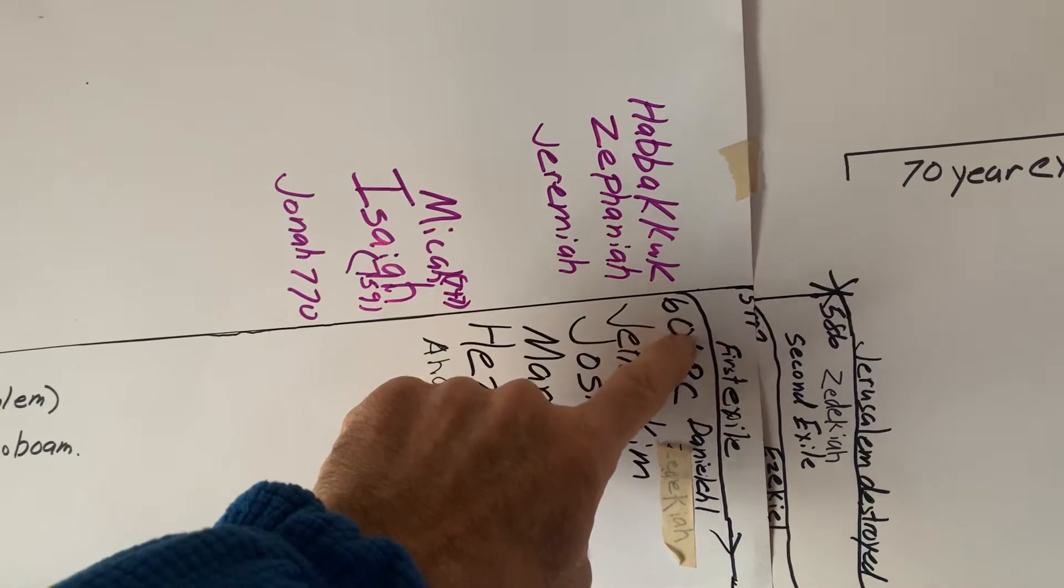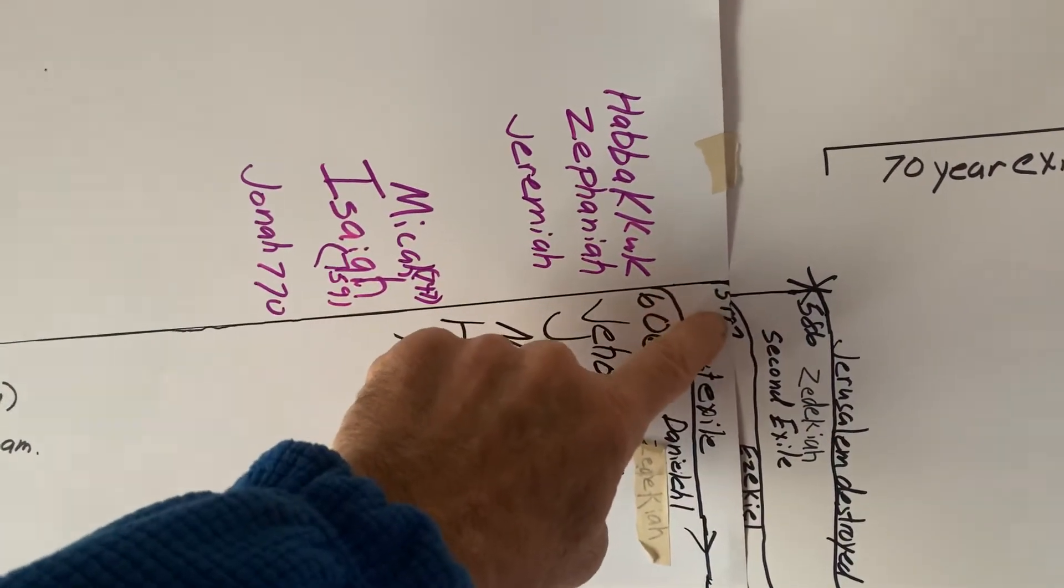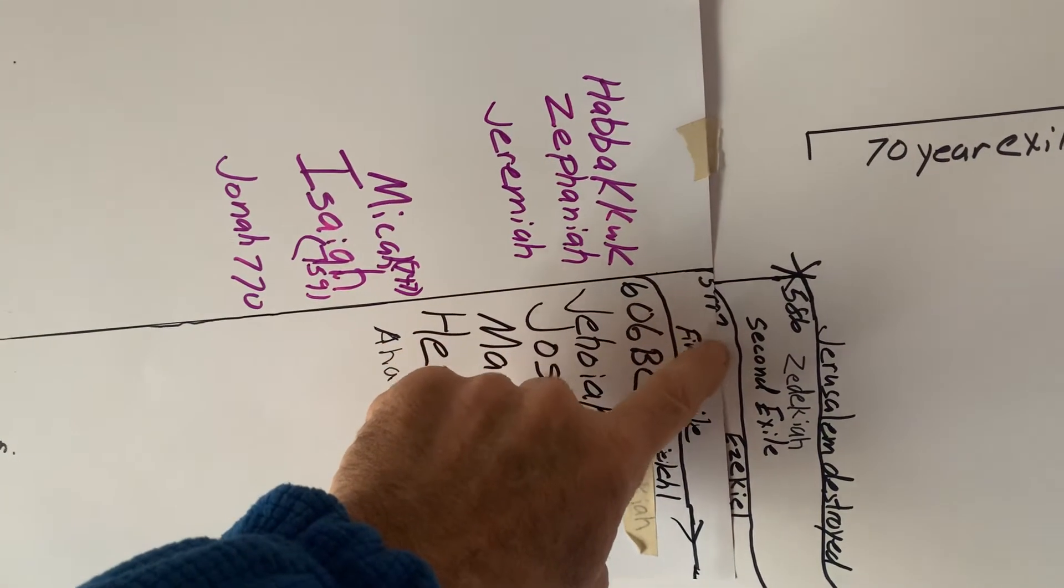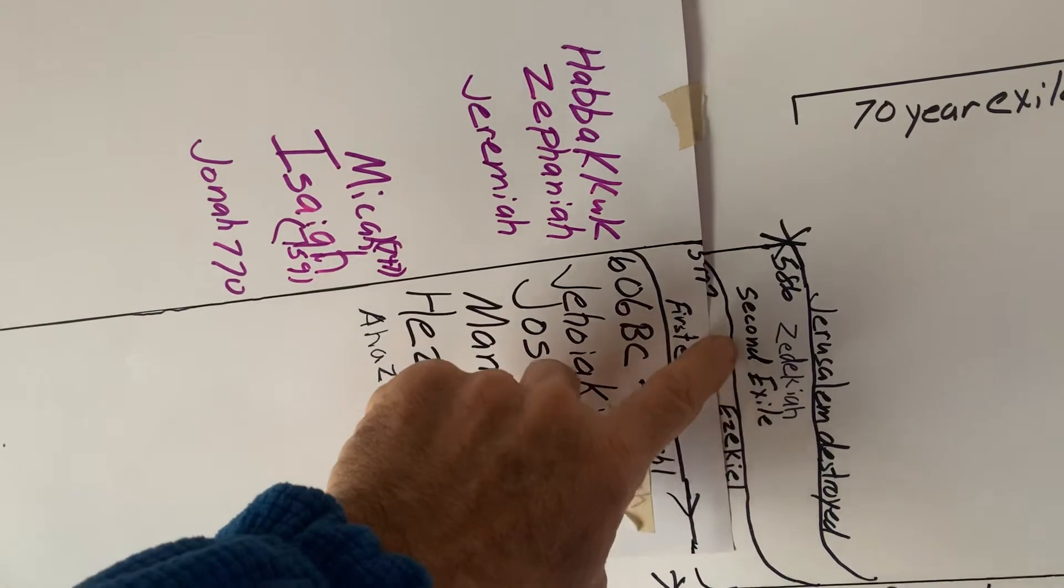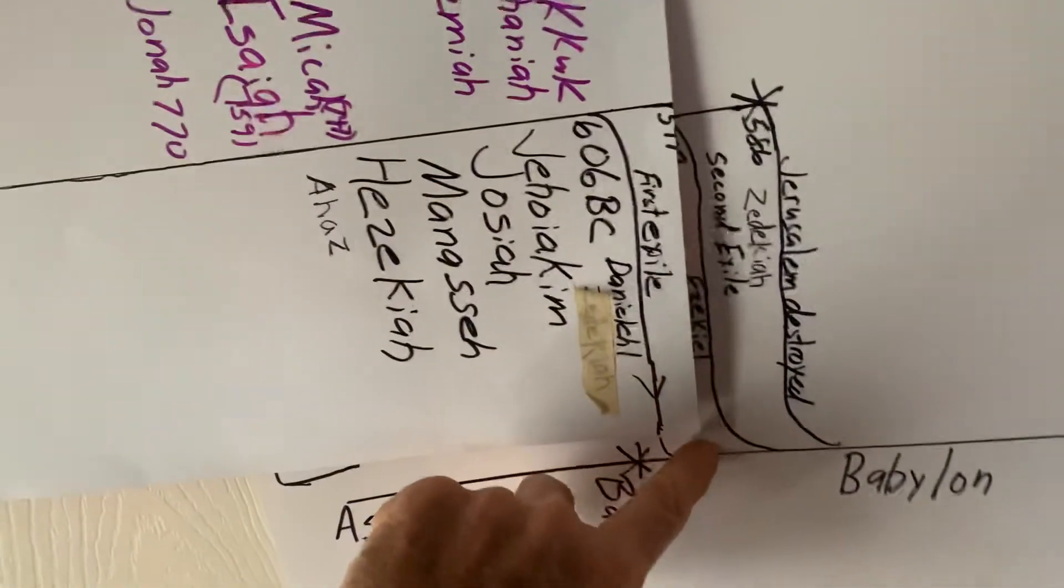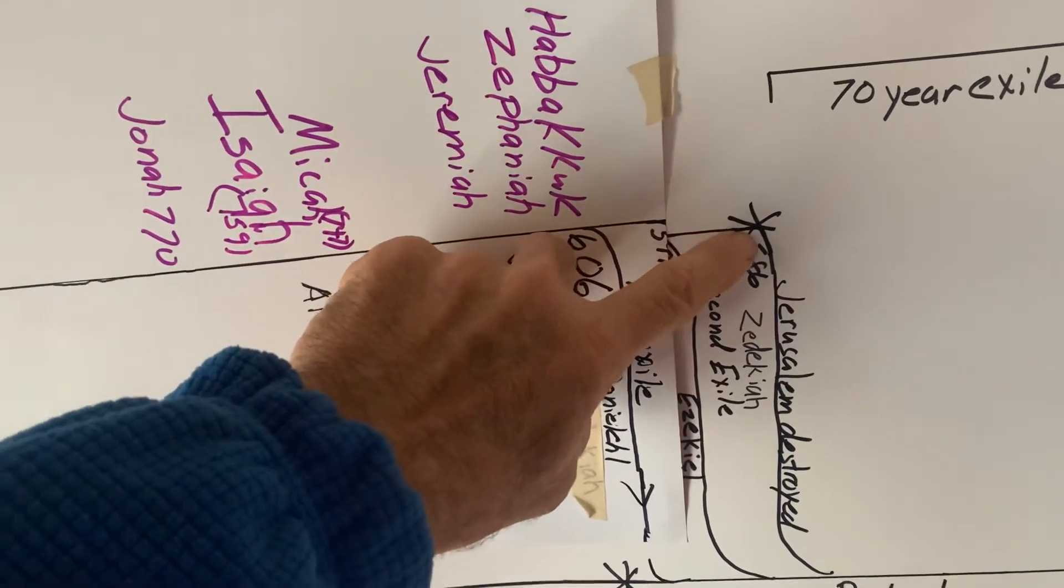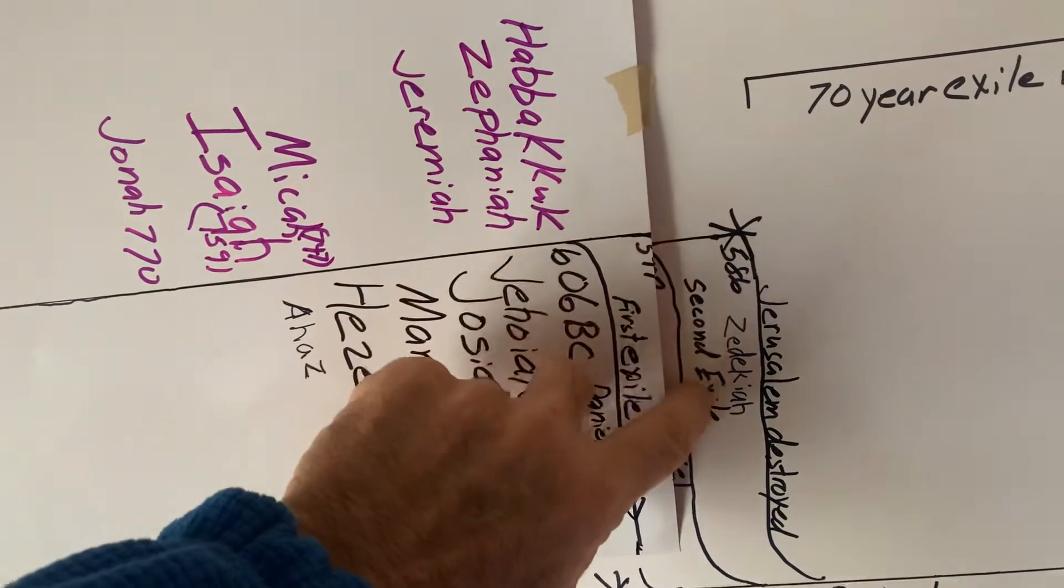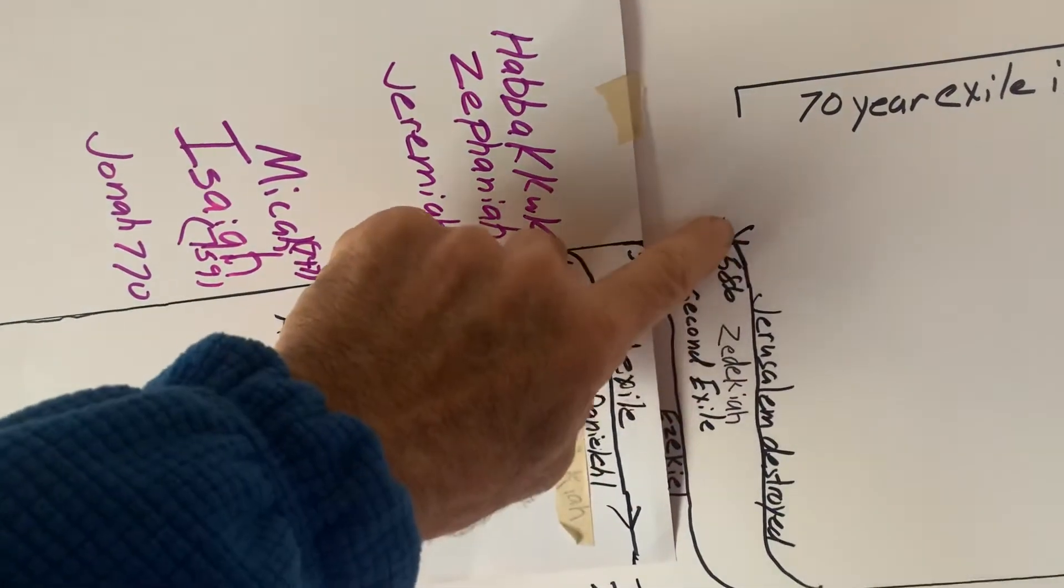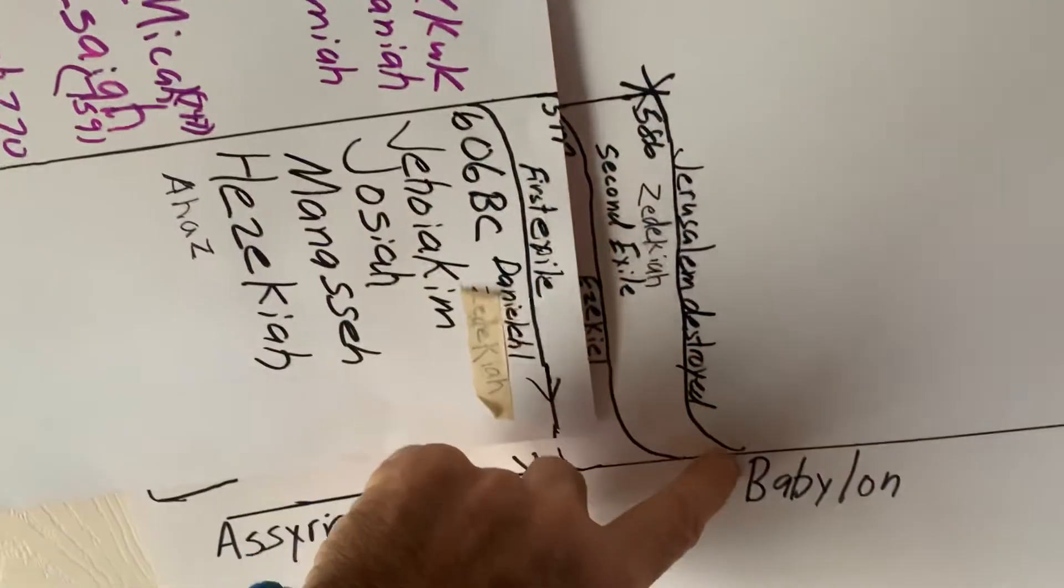This is in Daniel chapter 1, when Daniel and his friends are taken. A little later, 597 before Christ, Ezekiel and 10,000 Israelites are taken to Babylon. And in 586 before Christ, this is the total destruction of Jerusalem under a king called Zedekiah, and these guys are taken to Babylon.